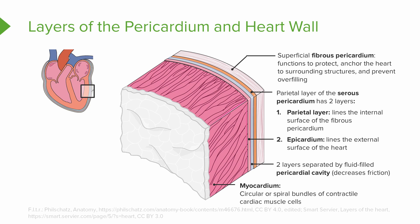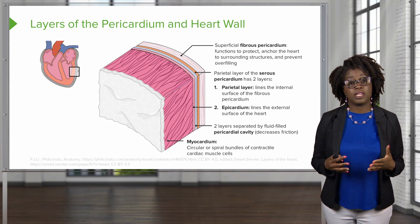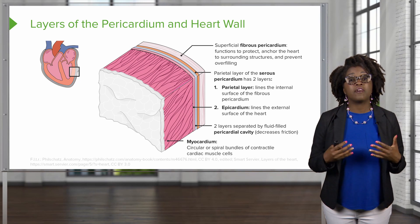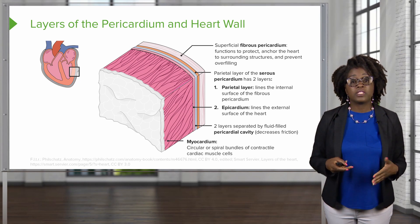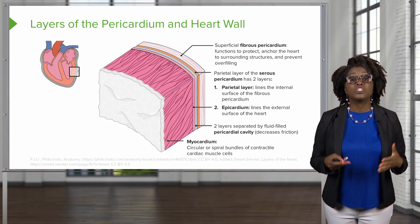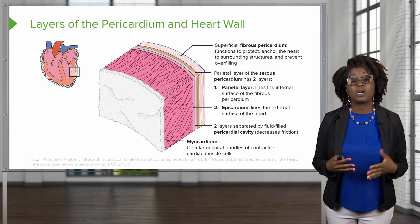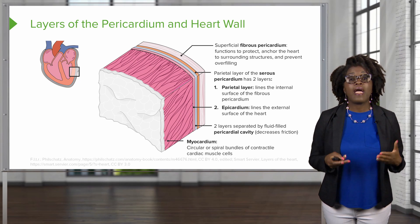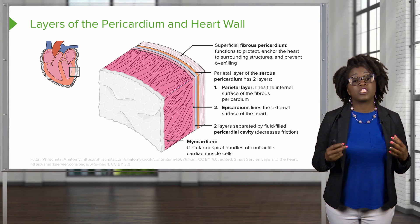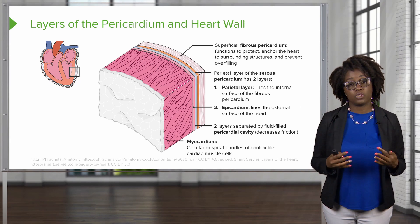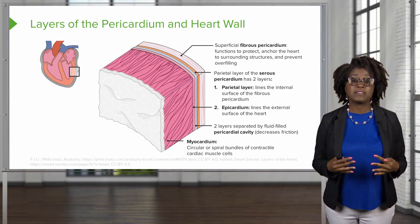The internal portion of the heart that forms and anchors the heart valves is known as the cardiac skeleton. This is a crisscrossing, interlacing layer of connective tissue that anchors our cardiac muscle fibers, supports the great vessels such as the aorta and the pulmonary trunk, as well as the semilunar valves, and limits the spread of action potentials to specific paths in the heart.